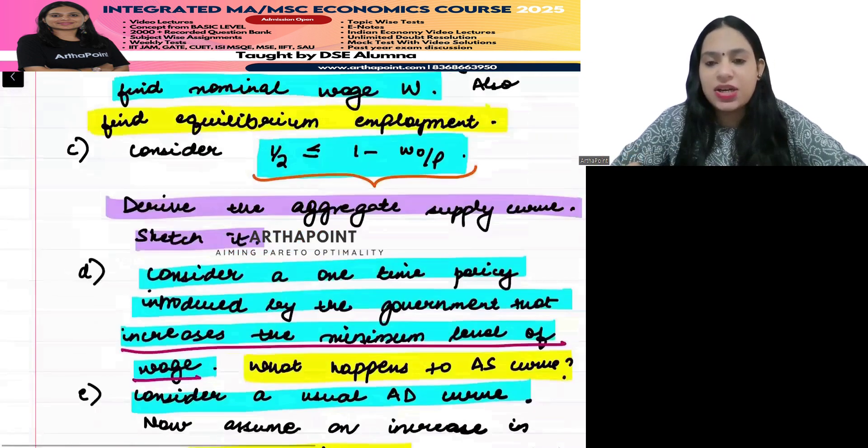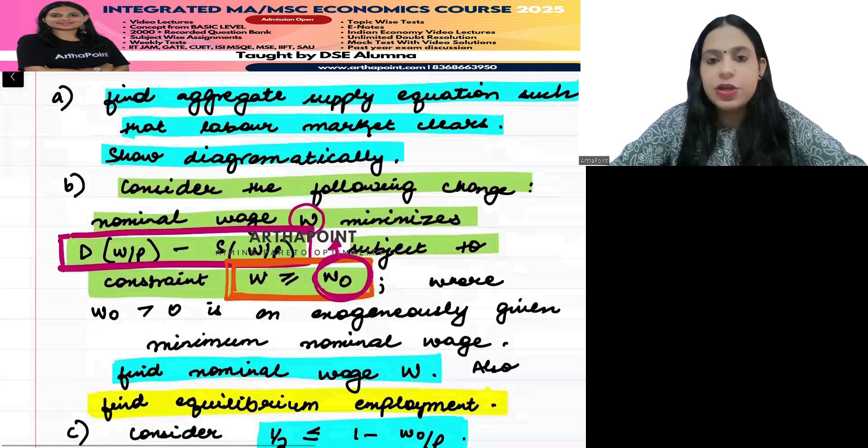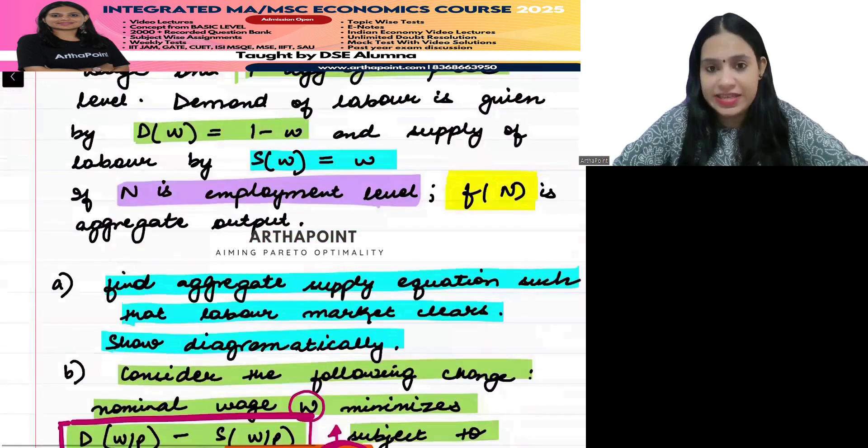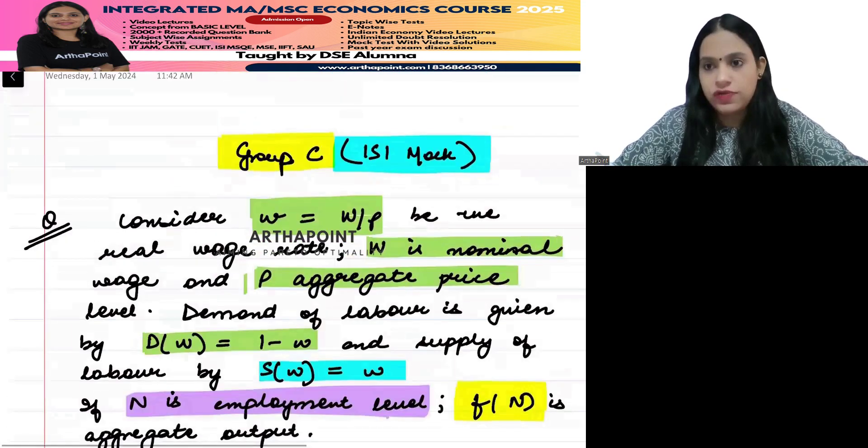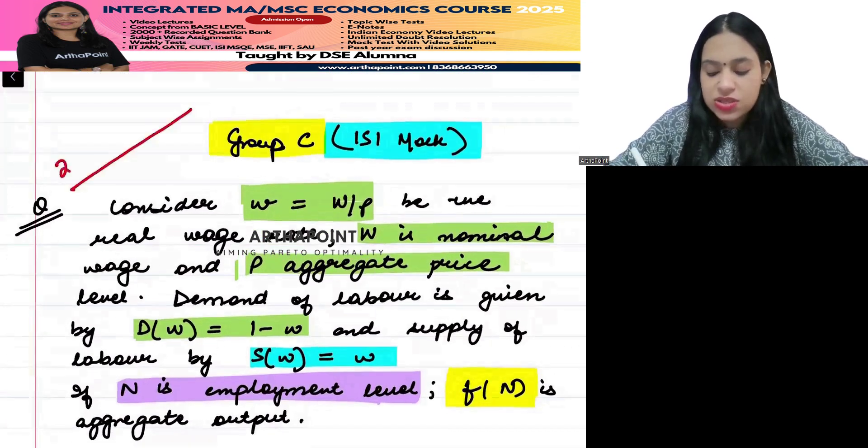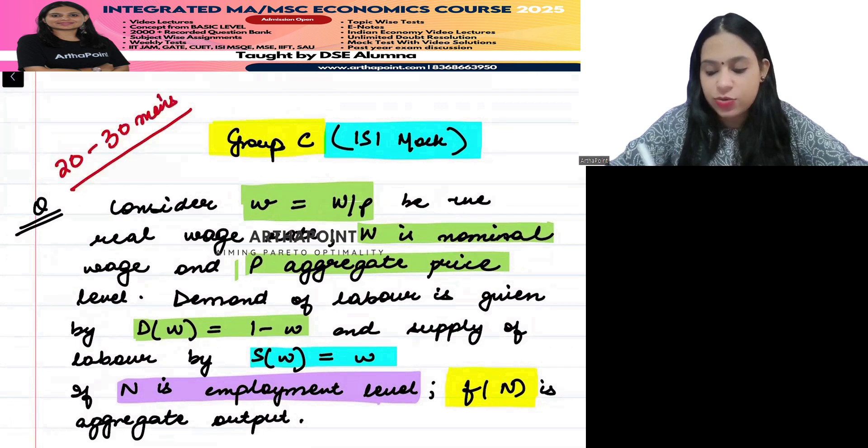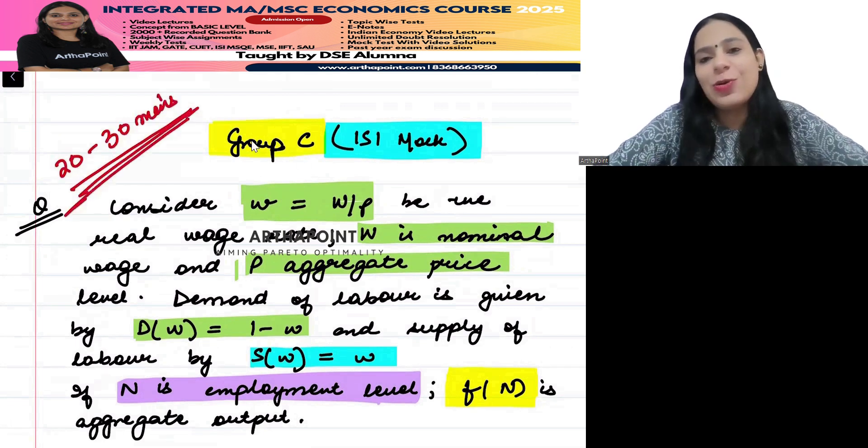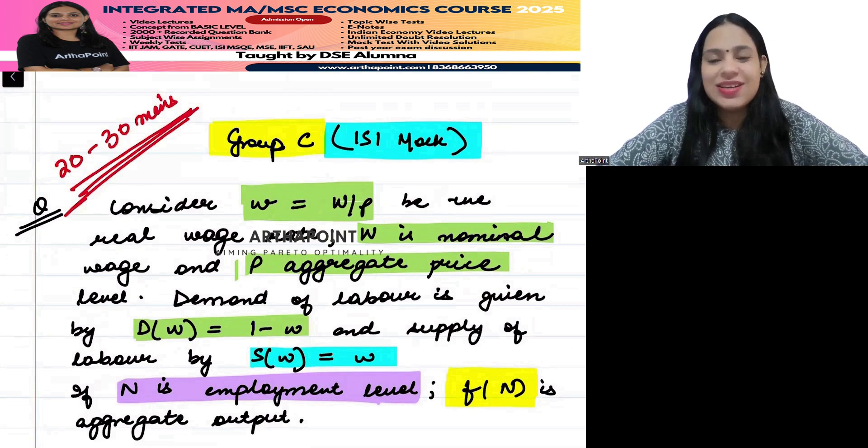These are the five parts to this question. I am giving you this as a full-fledged test. Try to solve this question and also take a timeline. Try to do this within 20 to 30 minutes for the entire question. Then I will discuss this question in the next video. Thank you.